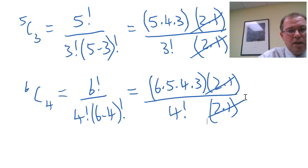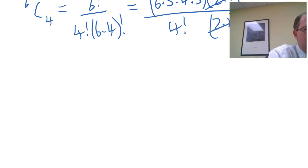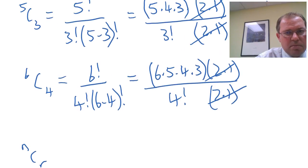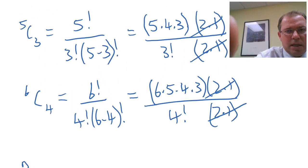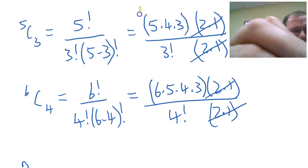Notice that 6 choose 4 is 6 times 5 times 4 times 3, 4 numbers over 4 factorial. So now let's try and develop a different formula for n choose r. Before I do this, I just want to point something out. I'll just grab a different colour here because this is the tricky bit. There's one slightly tricky bit to this.